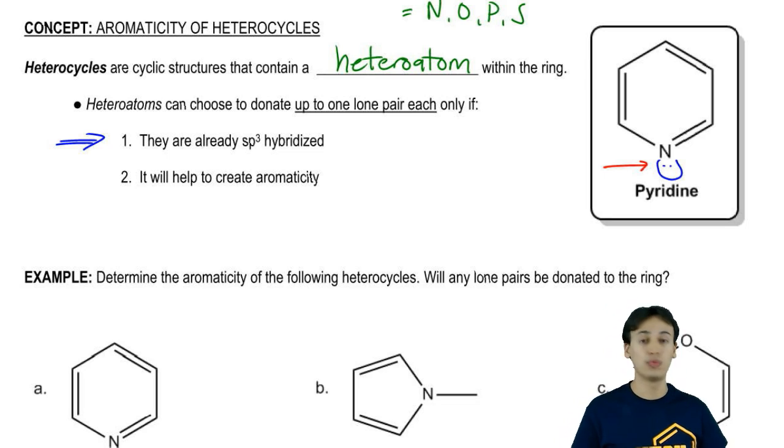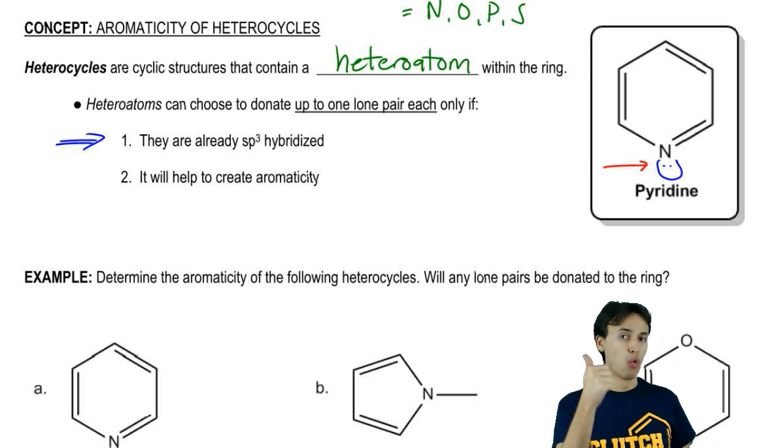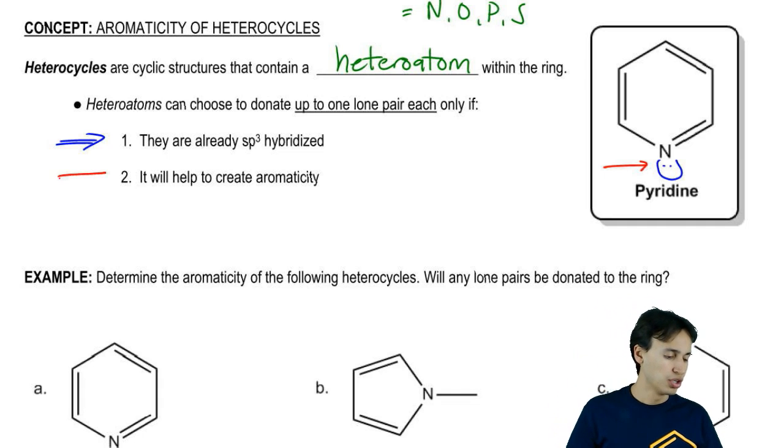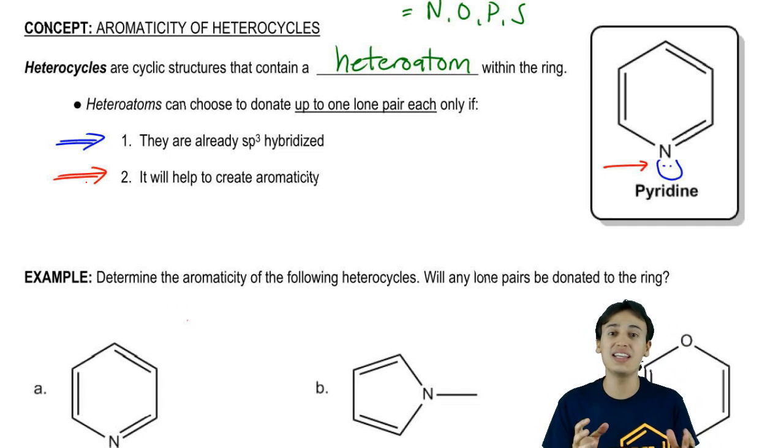But that's not the only thing. We have a second criteria. So one, the heteroatom needs to be sp3, but two, you're only going to donate if it helps to create aromaticity, meaning that you're not going to donate a lone pair if it goes against Huckel's rule. If you wind up getting a number of pi electrons that makes it anti-aromatic or non-aromatic, you would only donate if it makes it aromatic.